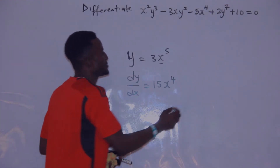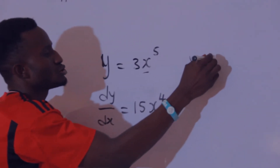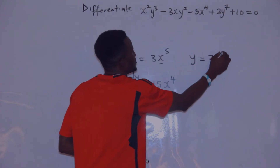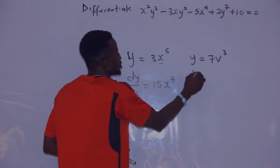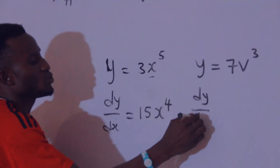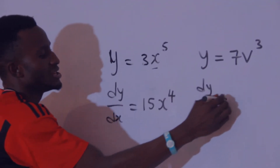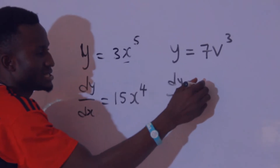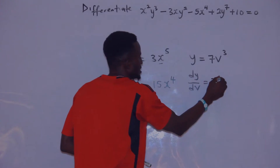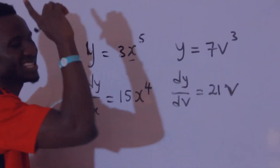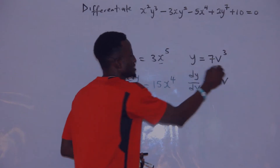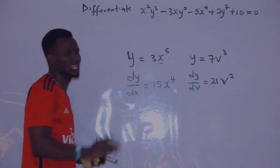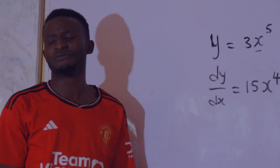For example, if you have y equals 7v raised to the power 3, and you are asked to find dy/dv, the answer will be 3 times 7, that is 21, then v raised to the power 3 minus 1, which equals 2. This is the basic knowledge of differentiation.